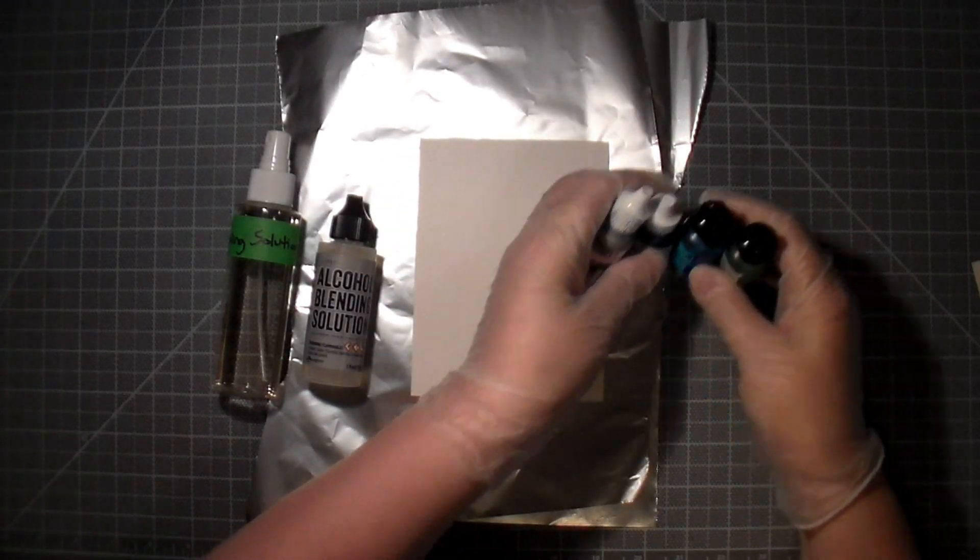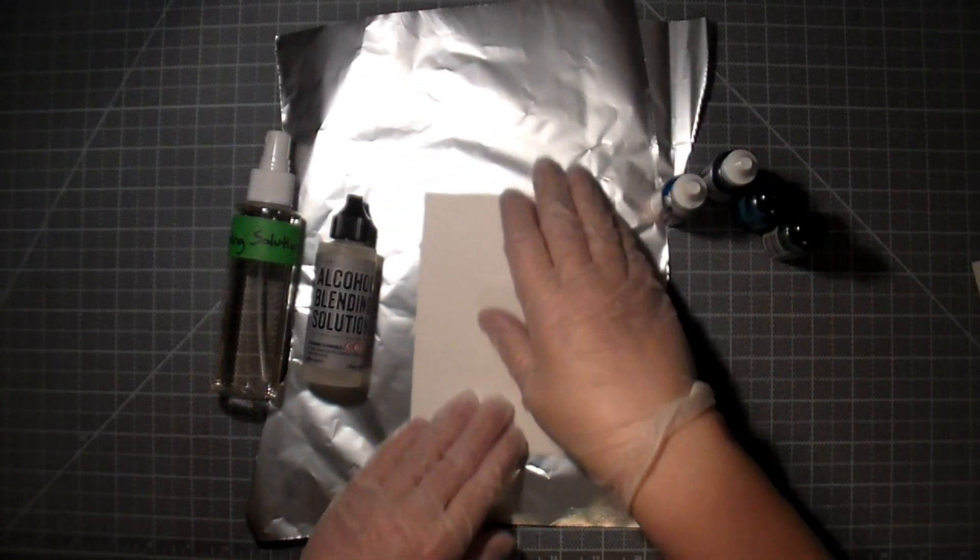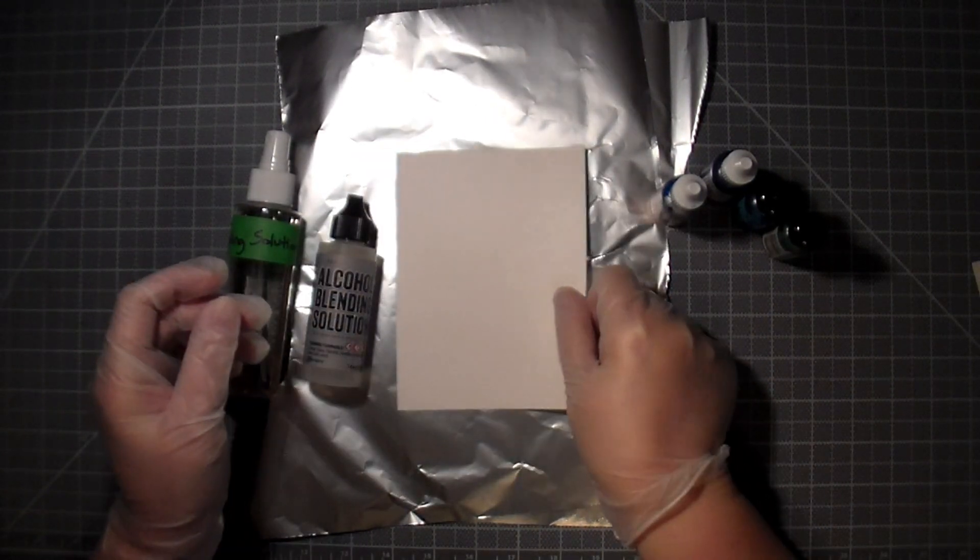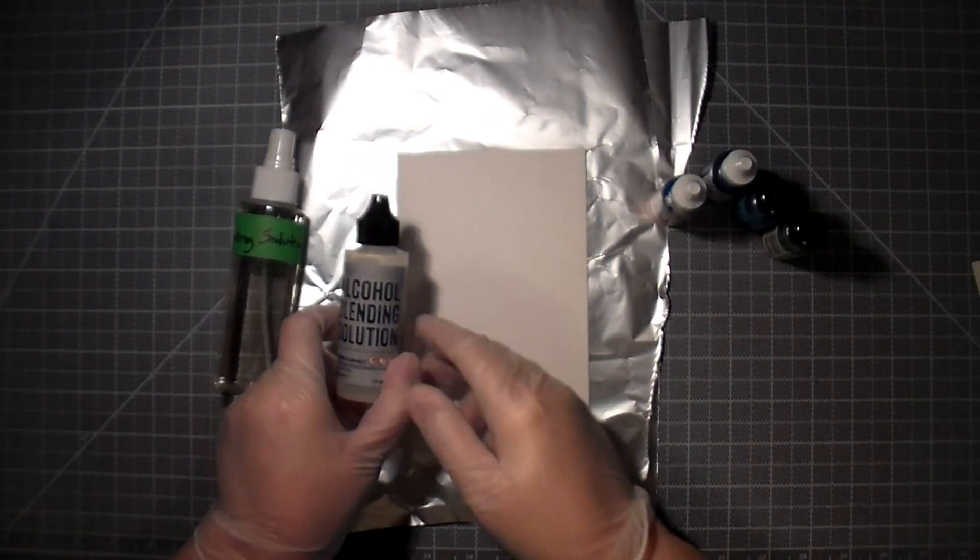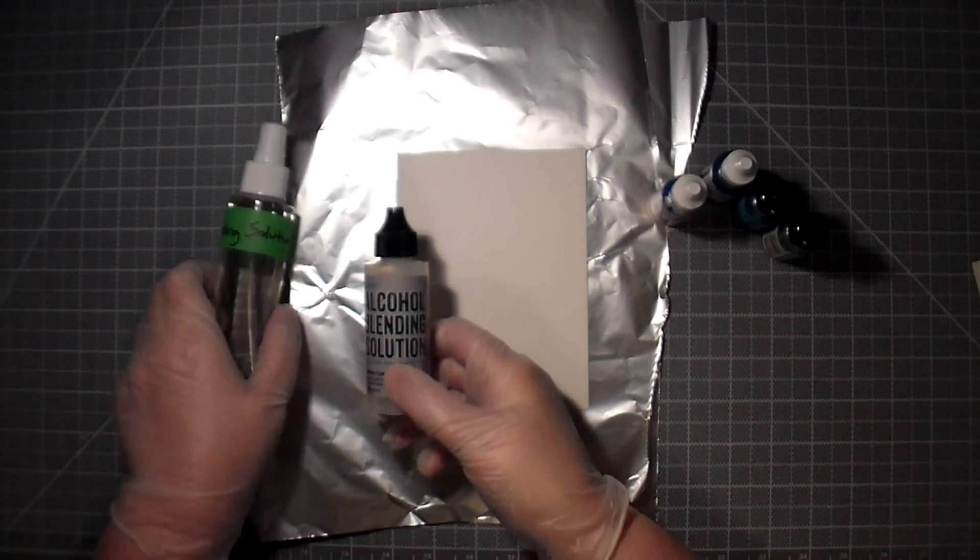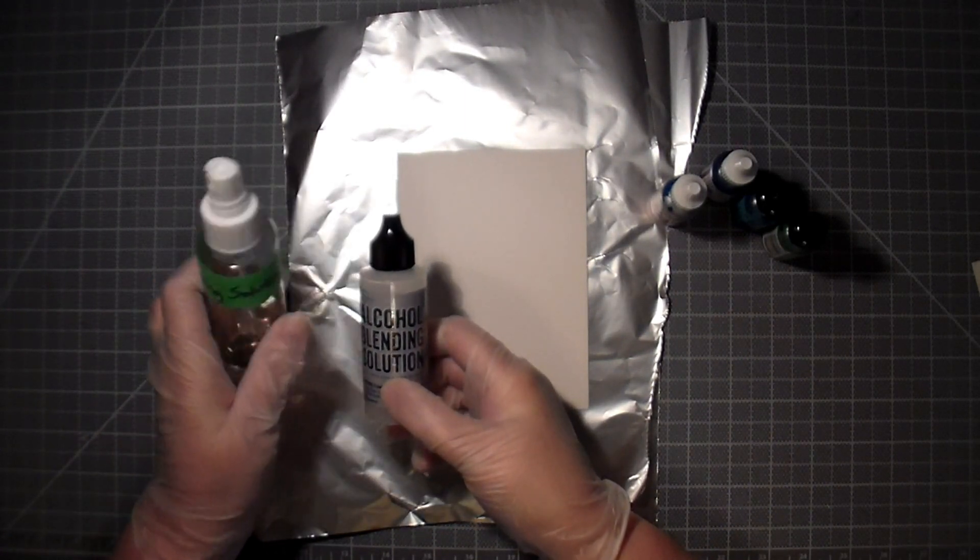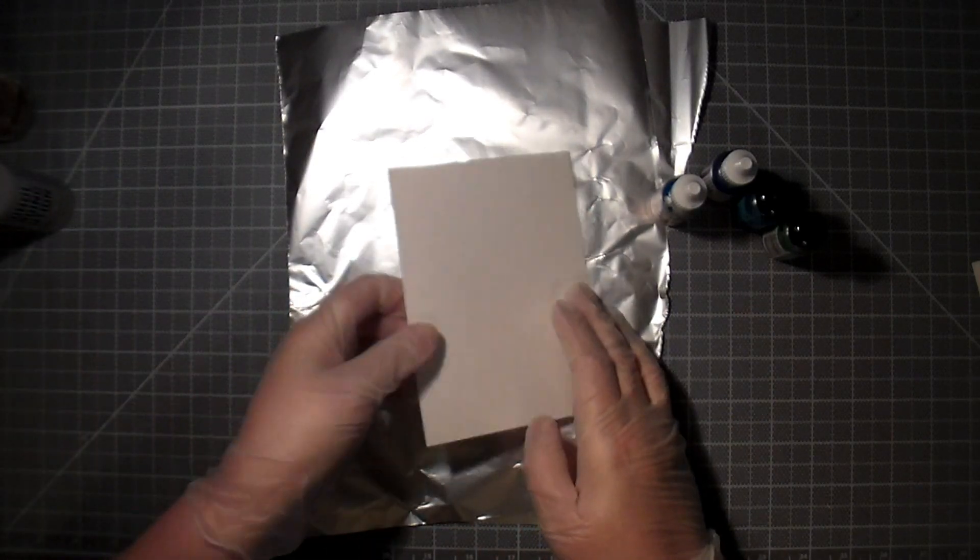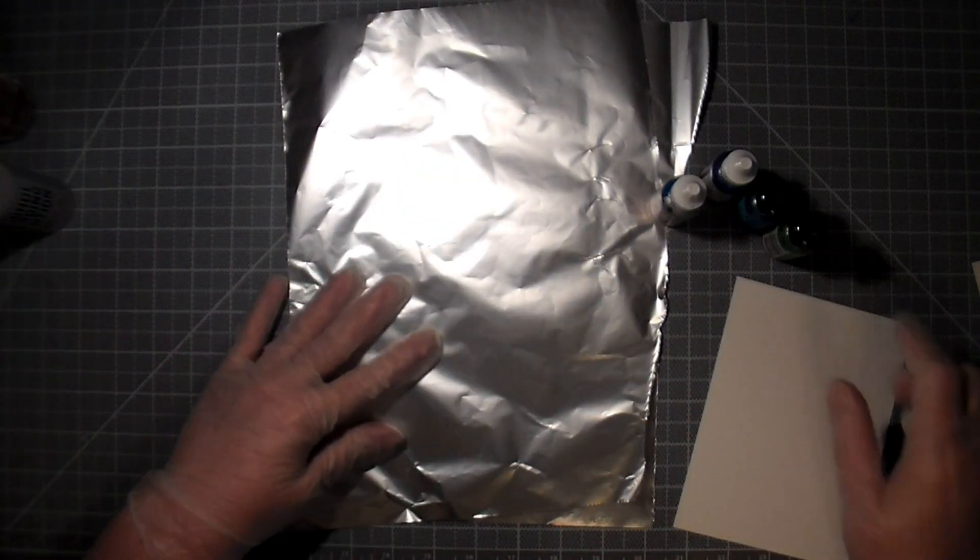Hello, Thompson here, and I'm going to show you how I use alcohol inks with Yupo paper. I've got some blending solution that I'm going to use in a mister bottle just to make it easier. I've put foil down on my work surface to protect it. Alcohol inks stain everything, and I'm also wearing gloves.